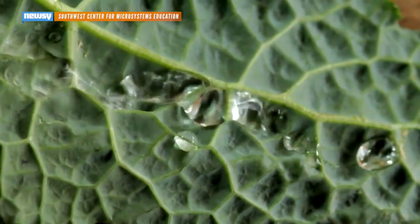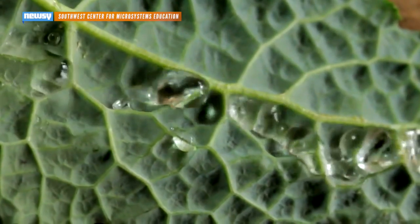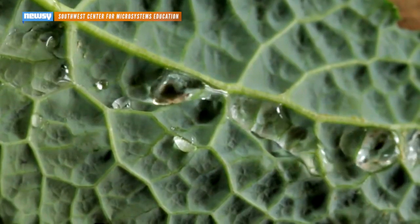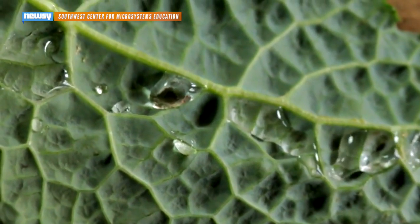Some plants, like this kale, have hydrophobic leaves. Microscopic structures on the leaves as well as waxy coatings help water slide off, which cleans the leaves in the rain.